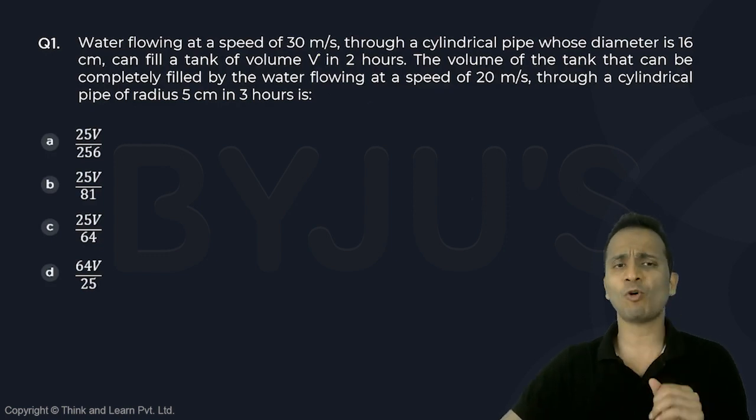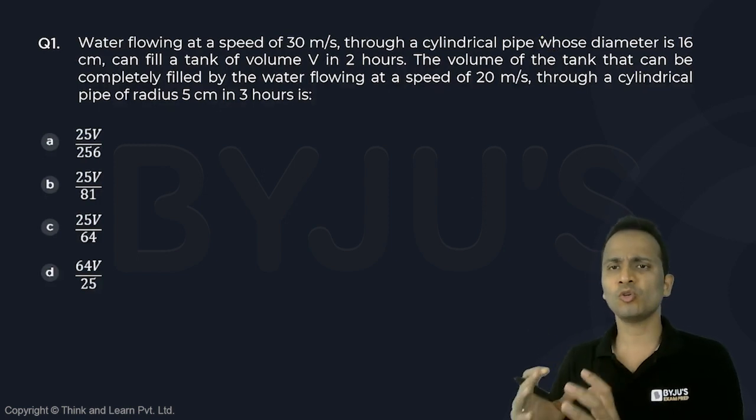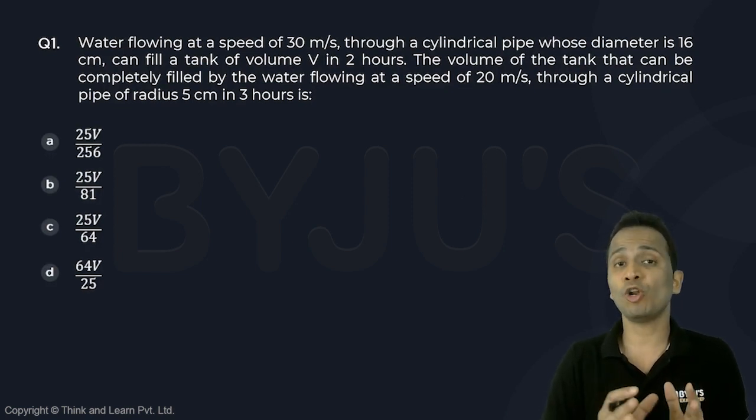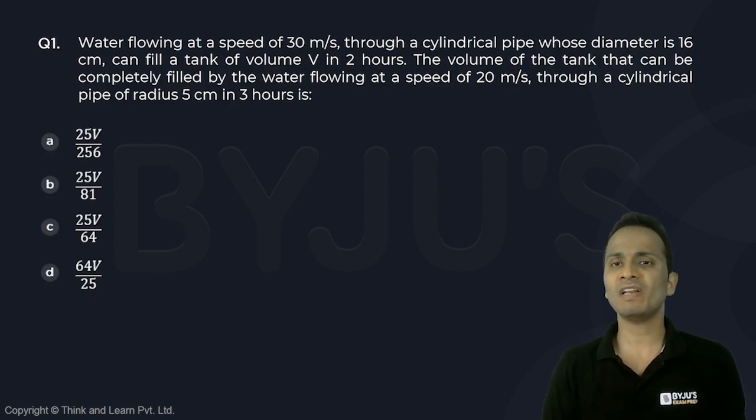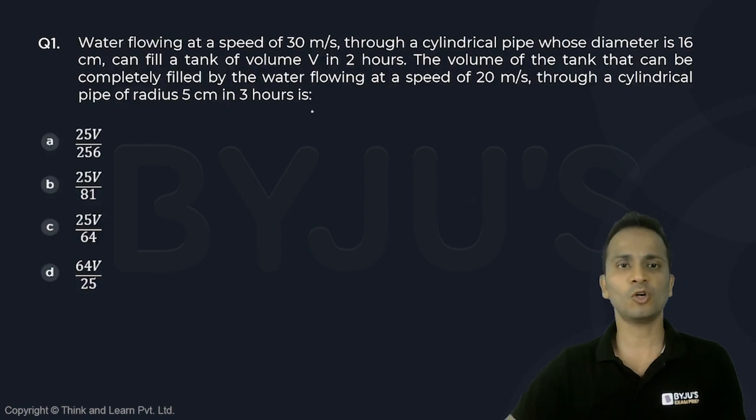This question says that water flows at 30 meters per second through a cylindrical pipe whose diameter is 16 cm, and this can completely fill volume V in 2 hours. We have to find the volume of the tank that can be completely filled by water flowing at a rate of 20 meters per second through a cylindrical pipe whose cross-section radius is 5 centimeters in 3 hours.